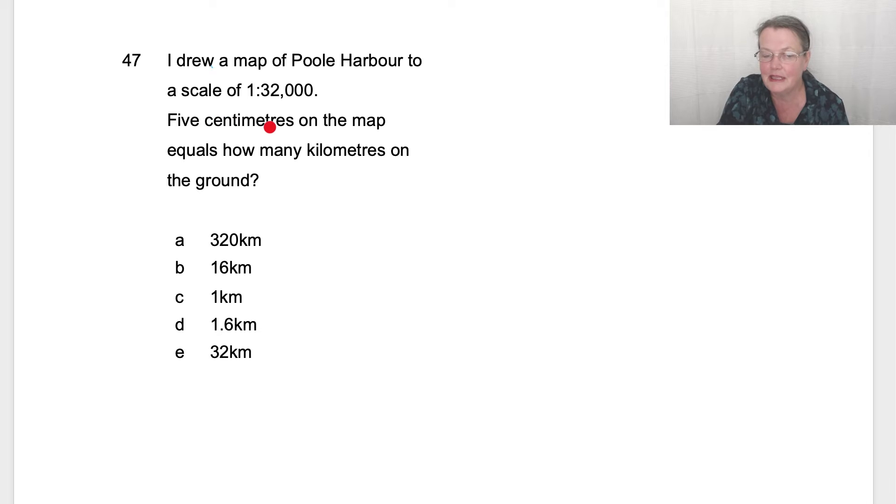Let's have a little look. What's the golden rule? That's right - one centimeter on the map equals 32,000 centimeters in real life.